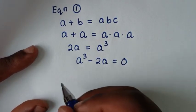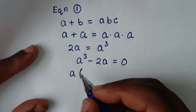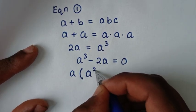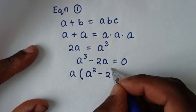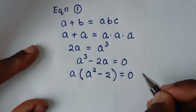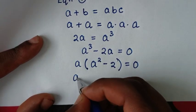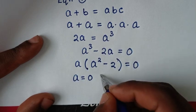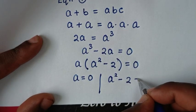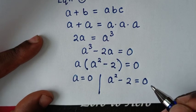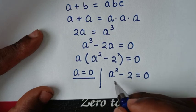From here, a is common, so we factor it out: a times (a squared minus 2) is equal to 0. This gives two solutions — the first solution is a is equal to 0, and the second solution is a squared minus 2 is equal to 0.